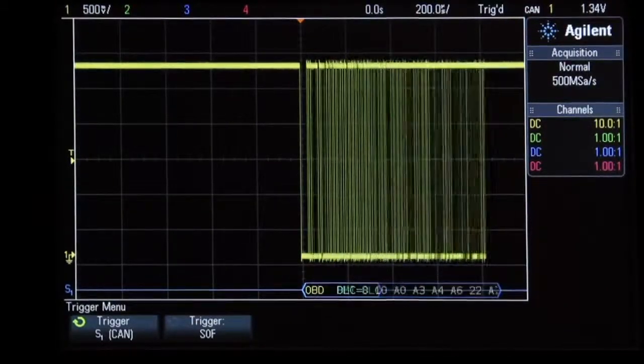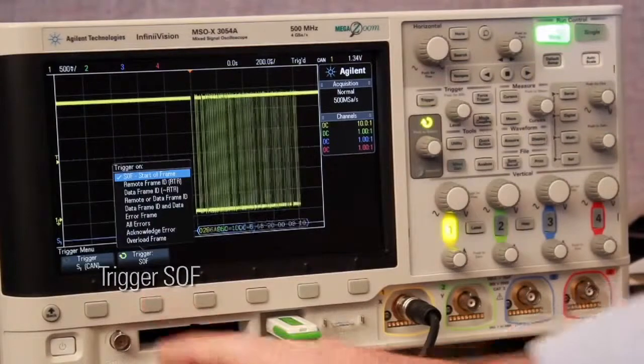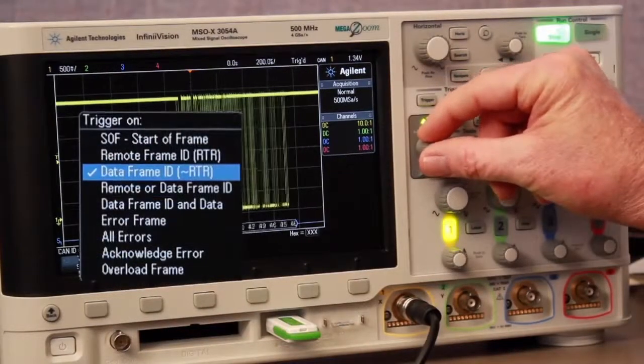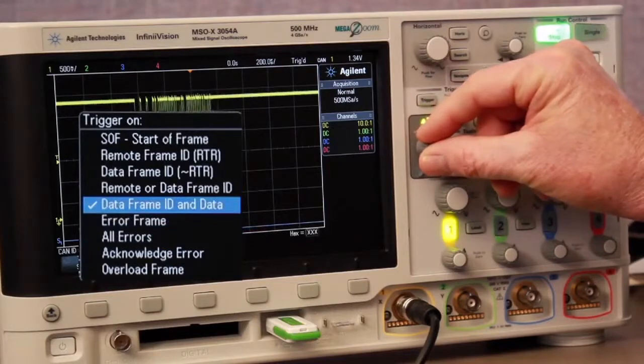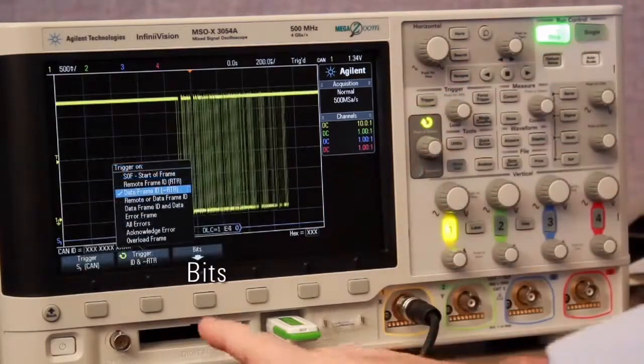Besides triggering on the start of any frame, this scope provides a variety of CAN trigger conditions to choose from. Let's select a trigger on a data frame with a specific ID.